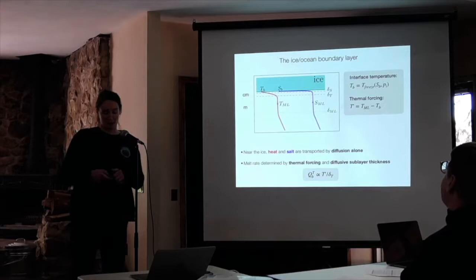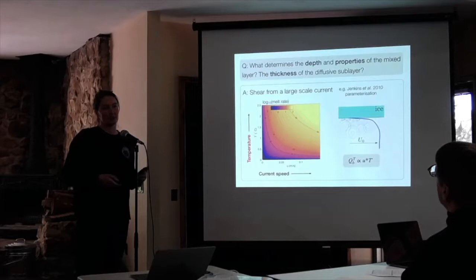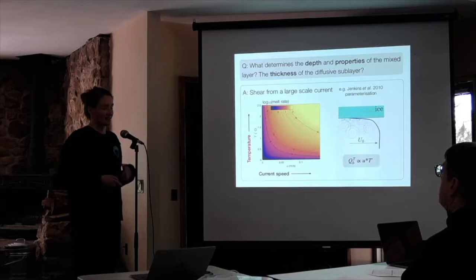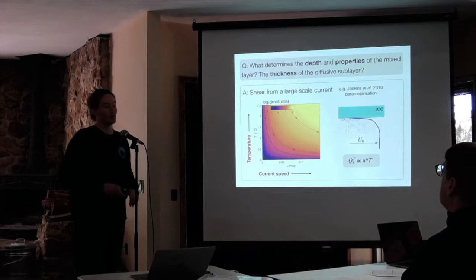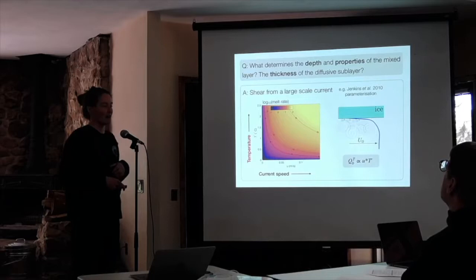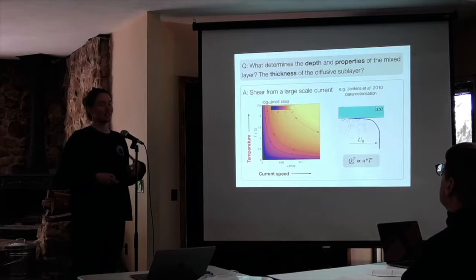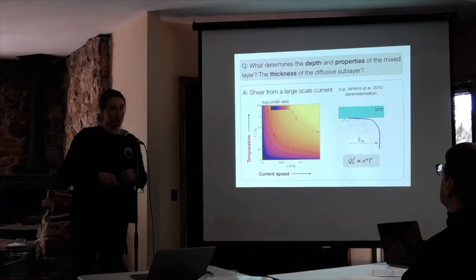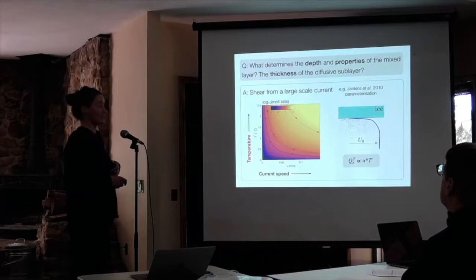How might we determine the depth and properties of this mixed layer and the thickness of the diffusive sublayer? One way — these things might be controlled by shear from a large-scale current, whether a tide, a plume, or an eddy — whatever it is, with velocity U0. There's friction between the current and the ice, and you generate turbulence. This is the paradigm that our current parameterizations of ice-ocean interactions exist in — heat flux is proportional to thermal forcing T-prime and the friction velocity U-star.